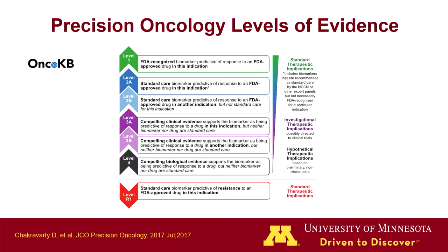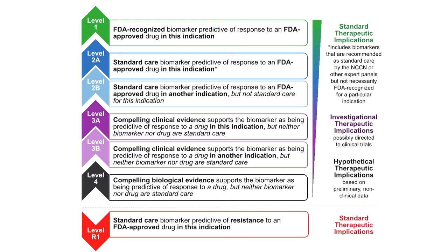Different levels of evidence and frameworks for evaluating evidence have emerged. Most of you are probably familiar with PharmGKB. In oncology, a new knowledge database has been developed called OncoKB, from Memorial Sloan-Kettering. Level 1 is a federally FDA-recognized biomarker predictive of response with an FDA-approved drug in that indication — the highest level of evidence. As we go down these levels of evidence, we lose FDA approval or indications in that particular cancer type, or rely more on preclinical data. This algorithm also includes negative levels for resistance mechanisms predicting lack of response — for example, KRAS alteration in colon cancer predicting lack of response to EGFR-targeted monoclonal antibodies.